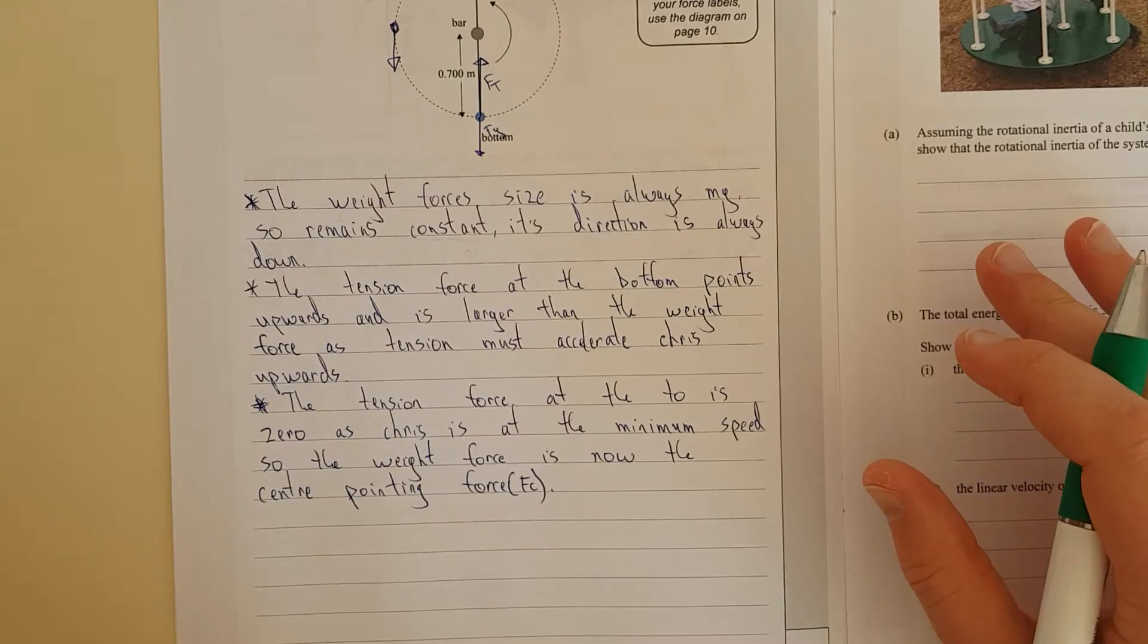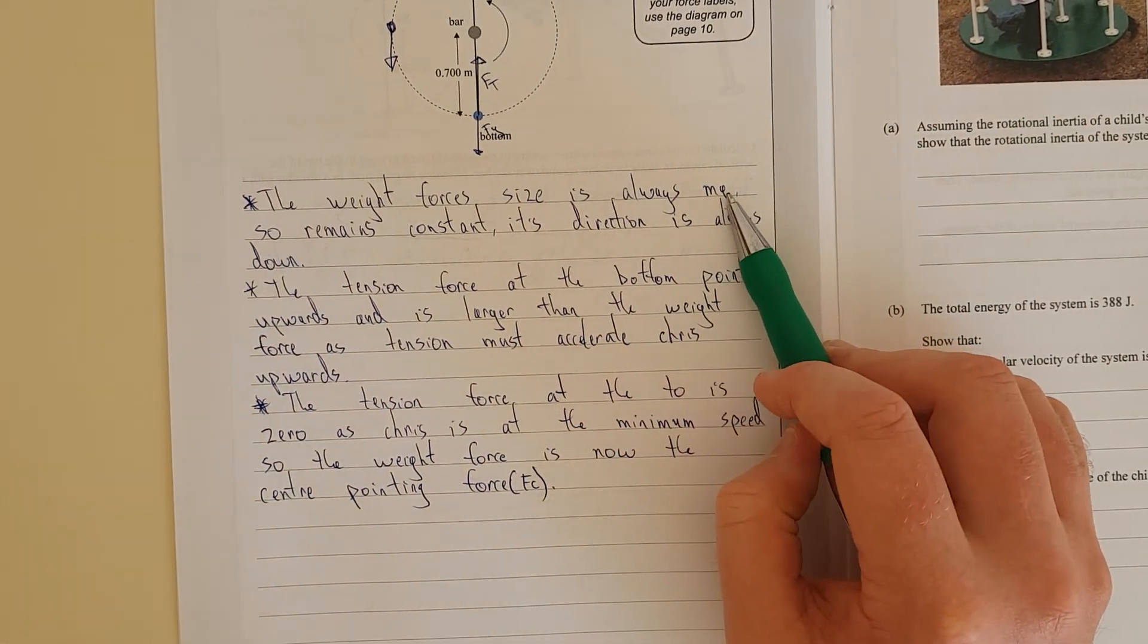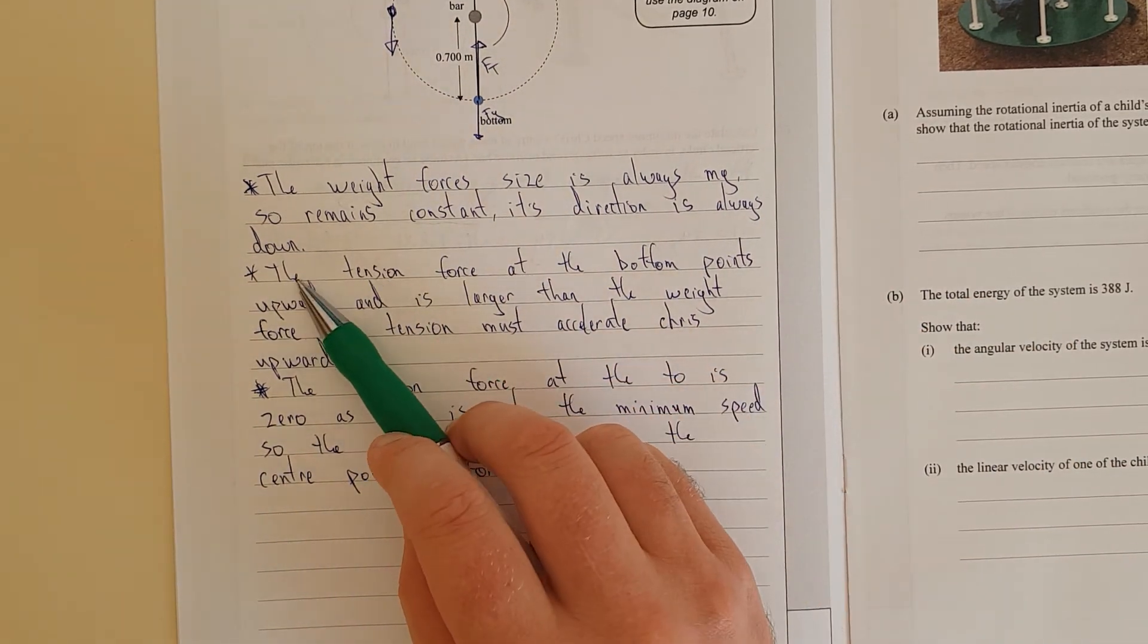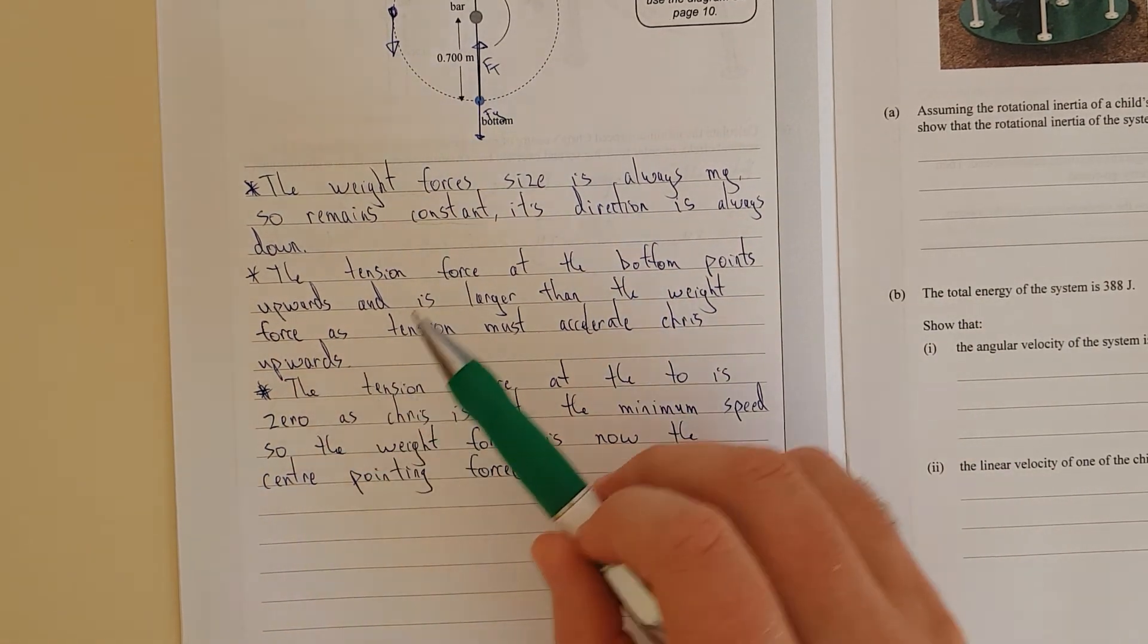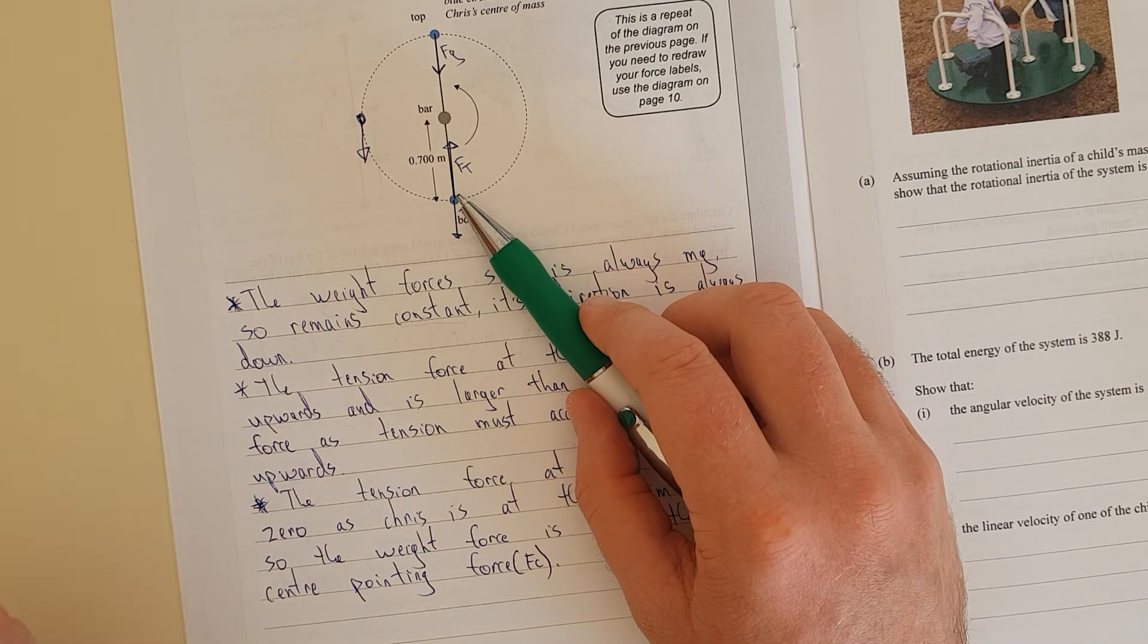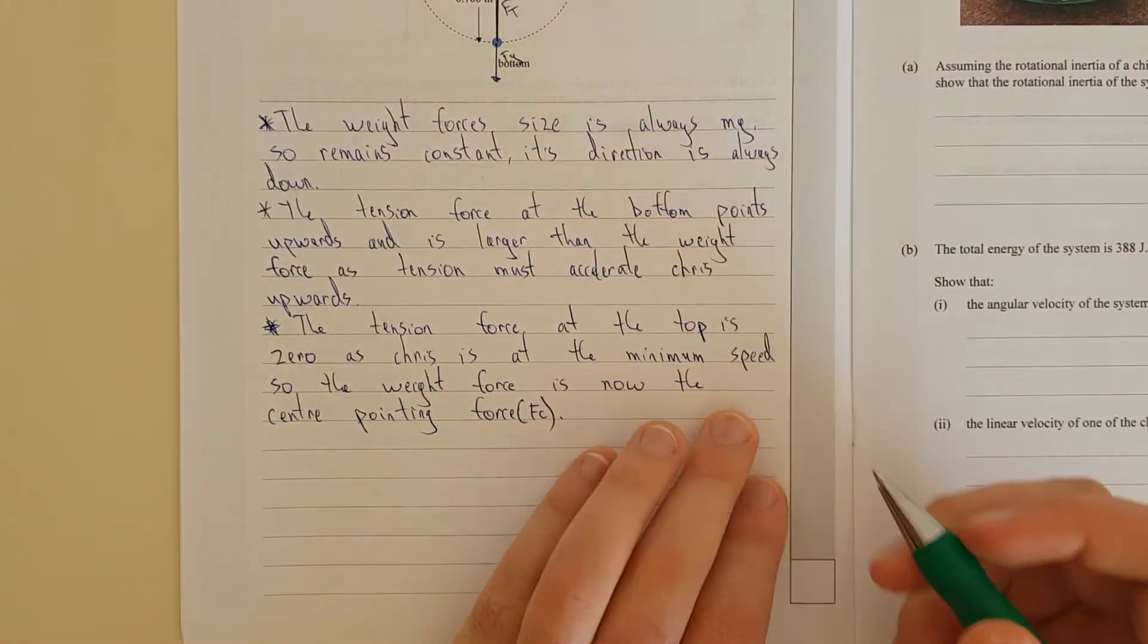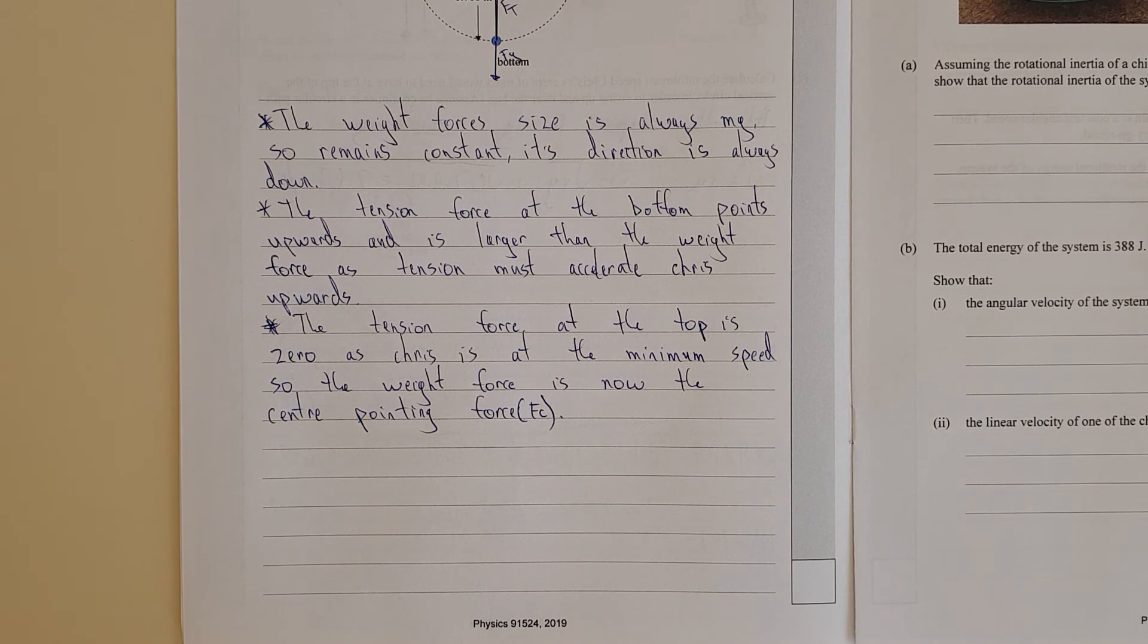I've said the weight force size is always mg, mass times gravity, so it remains constant. Its direction is always down. The tension force at the bottom points upwards and is larger than the weight force, as the tension must accelerate Chris upwards because he's going in a circle. At the bottom he's changing direction from going down to now going up. The tension force at the top is zero as Chris is at the minimum speed, so the weight force is now the centripetal force, Fc.